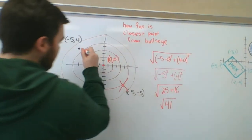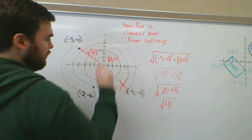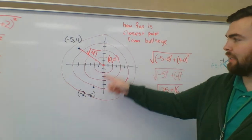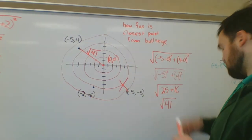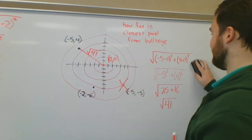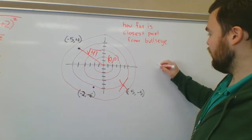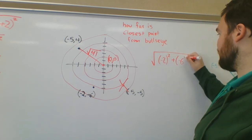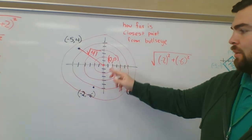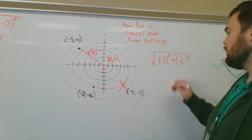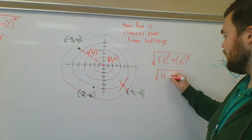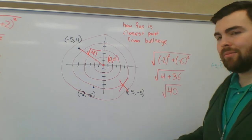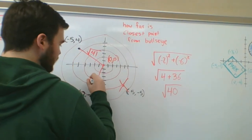For the point (−2, −6), since we're doing minus zero each time: √((−2)² + (−6)²) = √(4 + 36) = √40. That's only √1 away from √41 — incredibly close. But √40 is the smaller number, so it's the closer point.